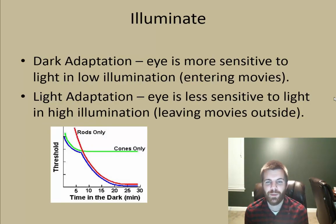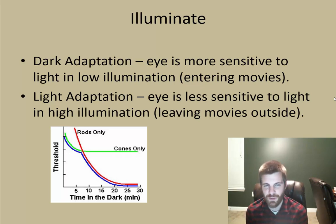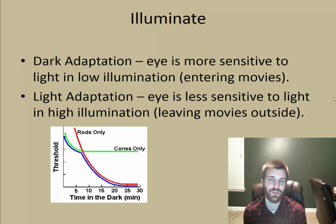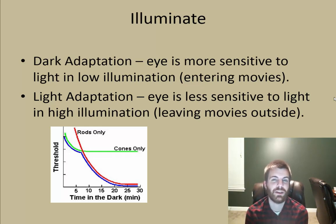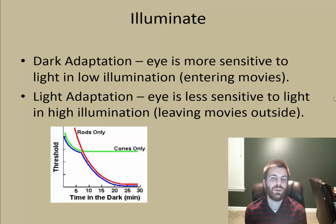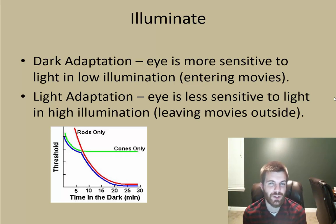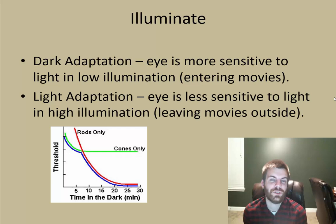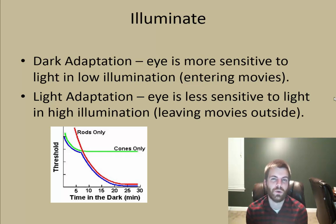Two processes your eye undergoes are dark and light adaptation. Dark adaptation is when your eye becomes more sensitive to light in low illumination — like when you enter a movie theater. Your eyes dilate to let more light through the pupil, which is also why a sudden flash of light in the dark seems super bright. When you leave the movie theater, you experience light adaptation — your eye is now less sensitive to light in high illumination. You cover your eyes because they're still dilated and need to constrict to not let so much light in.